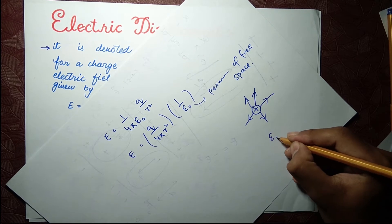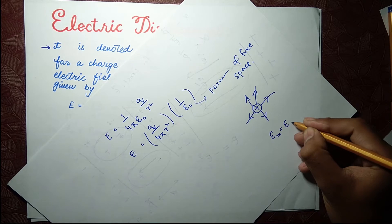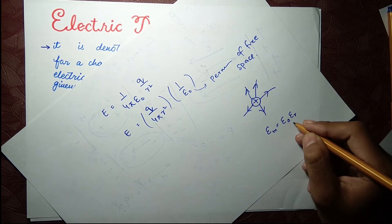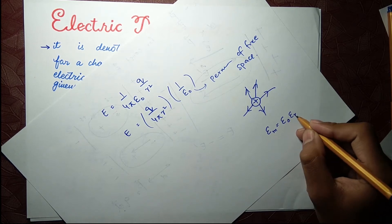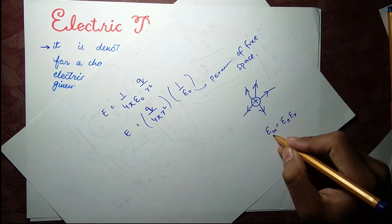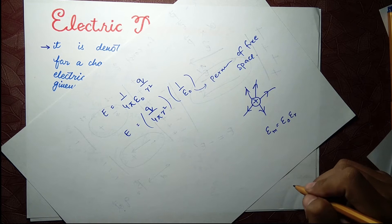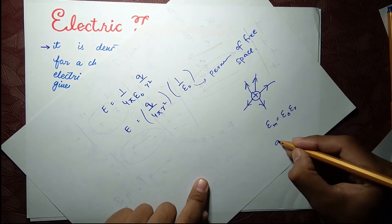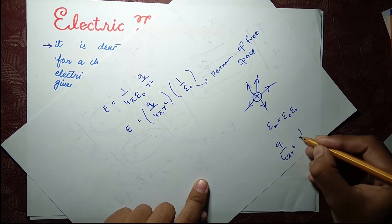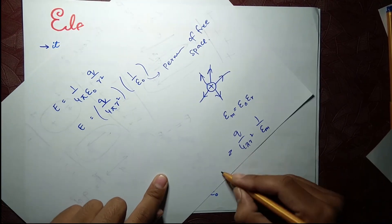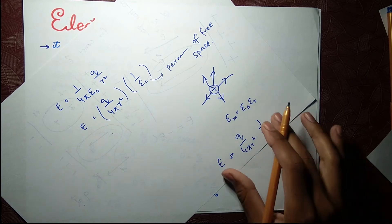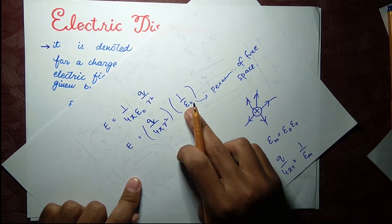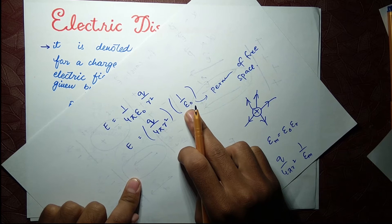When we talk about a medium, we use epsilon m. In the case of a dielectric, epsilon m equals epsilon naught times epsilon r, where epsilon naught is the permittivity of free space, epsilon r is the relative permittivity, and epsilon m is the permittivity of the medium. For a medium the field becomes q over four pi epsilon m r².